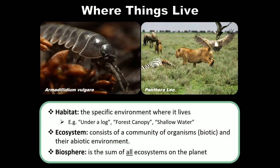An ecosystem consists of a community of organisms — that's the biotic component — and their abiotic environment. The term biotic means alive, so plants, animals, fungi, and bacteria are all living things that are a component of the ecosystem. Their abiotic environment includes all the non-living portions: the soil, the water, the nutrients, the air — all of these are non-living, abiotic components.